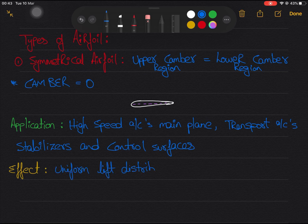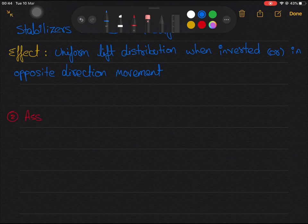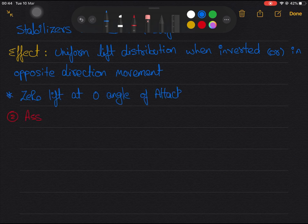And in tail plane of transport category aircraft as it provides same amount of deflection in both side of moments, that is up and down or right or left. As camber will be zero, it gives no lift at zero angle of attack.